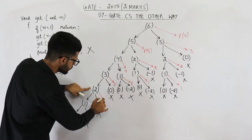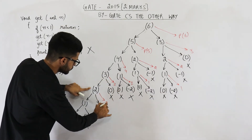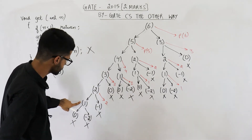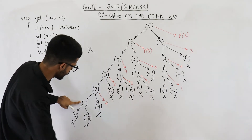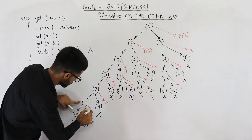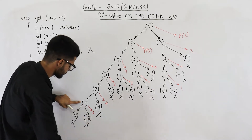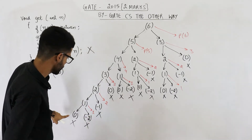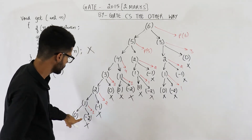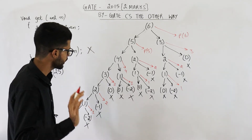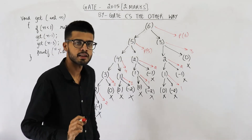This one is going to print 2. This one is going to print 1. And these nodes — get(0), get(minus 2), get(minus 1) — they will end without printing.